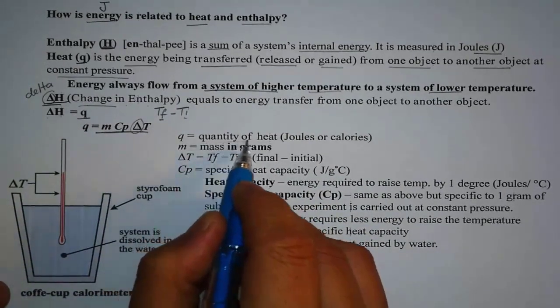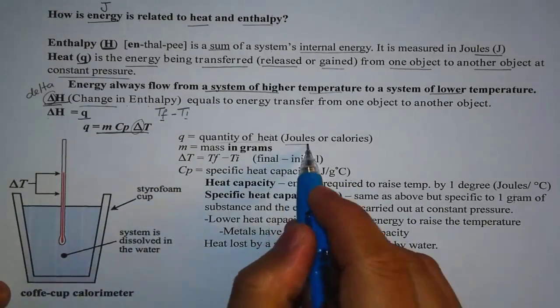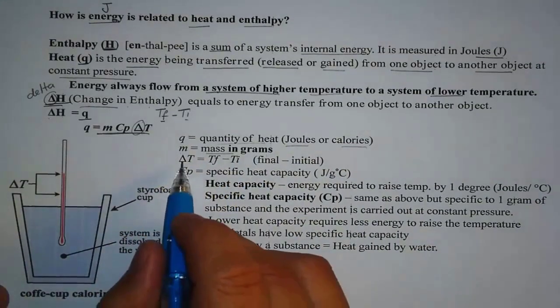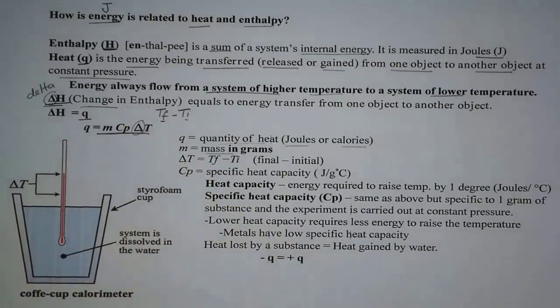Q again, is the quantity of heat, the energy being transferred, and is measured in joules or calories. While m is mass in grams. And delta T is T final minus T initial.